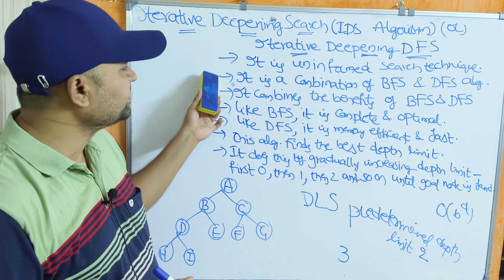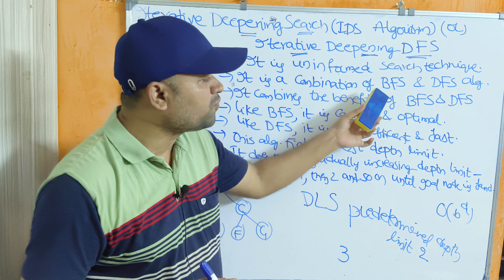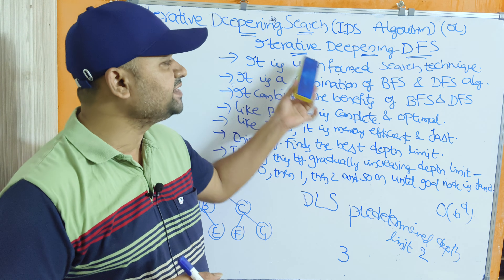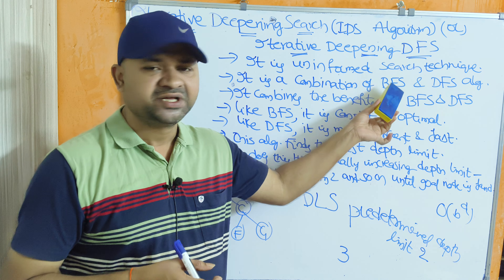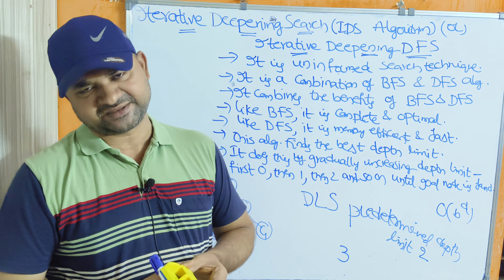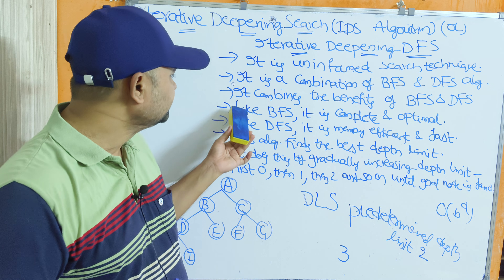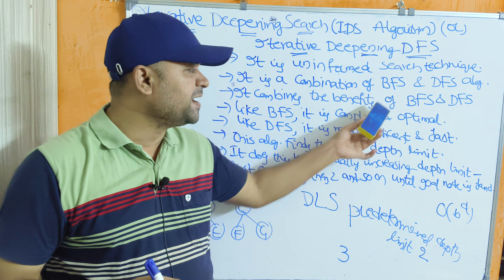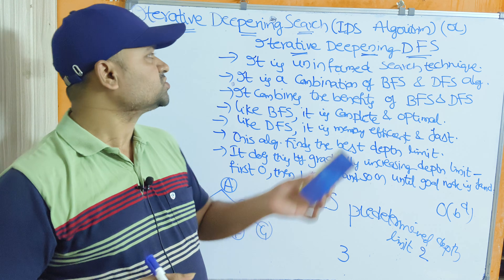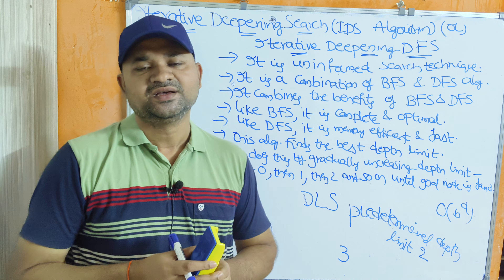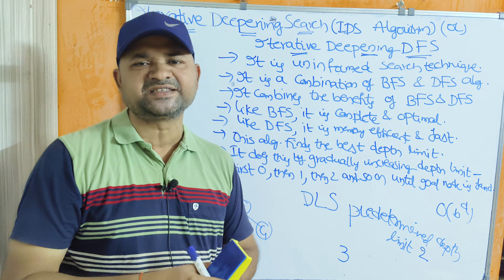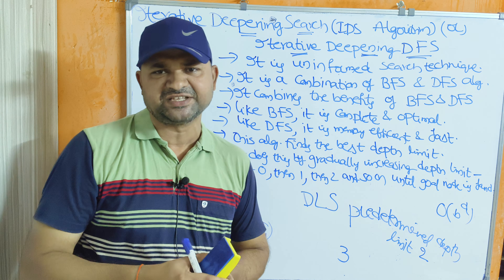IDS is a combination of breadth-first search and depth-first search. It combines the benefits of both BFS and DFS, using the advantages of each algorithm.